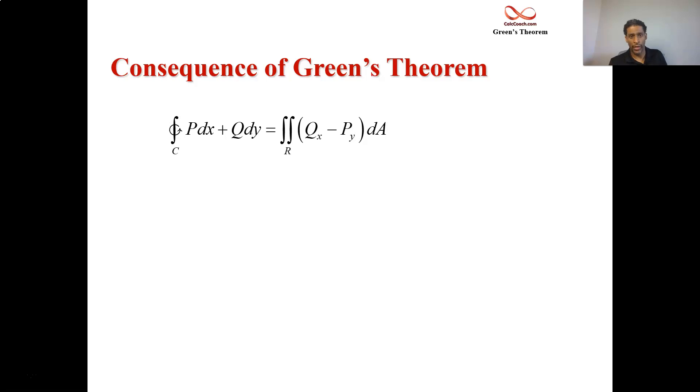First up, we're going to look at working backwards, having a double integral that represents area, and using Green's Theorem to actually calculate the line integral around the boundary. One of the consequences of Green's Theorem is that when qx minus py is equal to 1, then when you execute Green's Theorem, the double integral represents the area of the interior region.